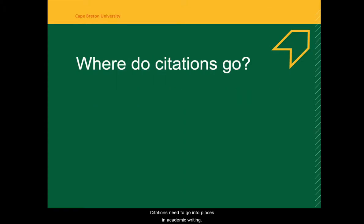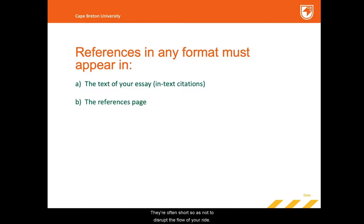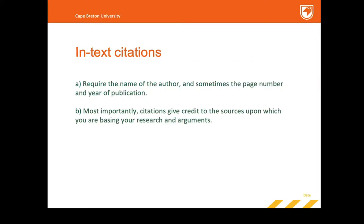Citations need to go in two places in academic writing. In-text citations tell the reader when a sentence contains words, ideas, or information from a source. They are often short so as not to disrupt the flow of your writing. The main function is to lead the reader to the complete citation in the assignment's full list of references. In-text citations require the name of the author and sometimes the page number and year of publication. Most importantly, citations give credit to the sources upon which you are basing your research and arguments.